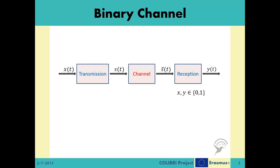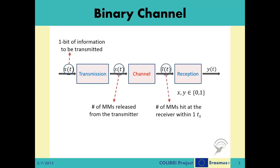Here, we define the four time varying intermediary parameters of the communication model as Xt, the one bit of information to be transmitted. St, the number of messenger molecules released from the transmitter. S̄t, the number of messenger molecules hit at the receiver within one symbol duration. And finally, Yt, the one bit of information received at the receiver device.